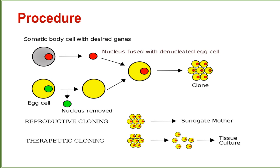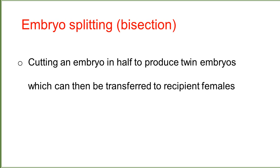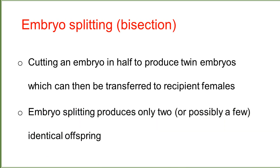In cloning, the nucleus from the egg cell is removed, and the denucleated cell is then fused with the somatic cell. Another related technology is embryo splitting, also known as bisection, which involves cutting an embryo in half to produce twin embryos that can then be transferred to recipient females. Embryo splitting produces only two identical offspring.